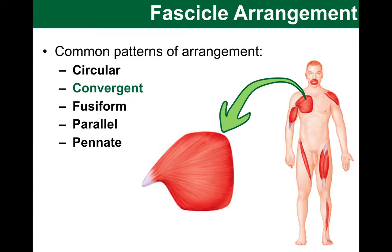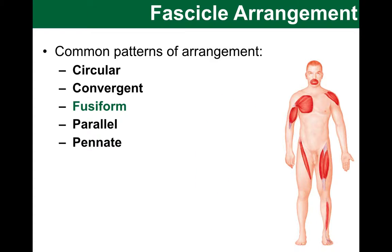Let's talk about fusiform arrangement. Here we have the biceps brachii muscle as an example — a good one to use as a sample. These are spindle-shaped muscles with fibers that run parallel to each other and fuse together at the ends.